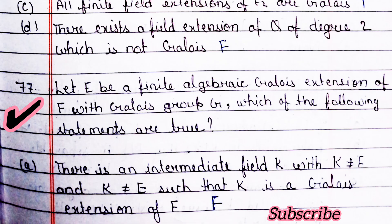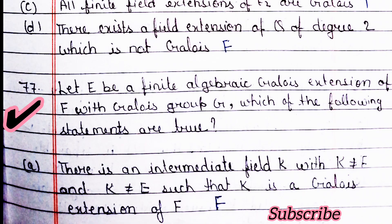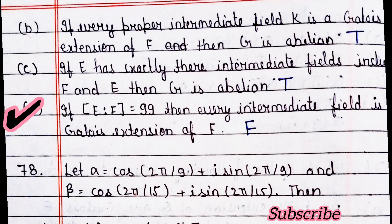Next question: let E be a finite algebraic Galois extension of F with Galois group G. Which statements are true? Statement one: there is an intermediate field K with K ≠ F and K ≠ E such that K is a Galois extension of F — this is false. Statement two: if every proper intermediate field K is a Galois extension of F, then G is abelian — this is true.